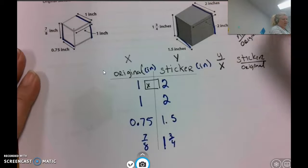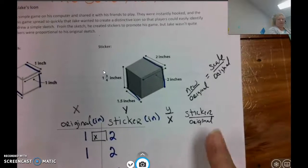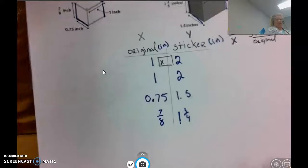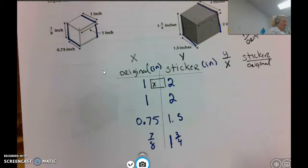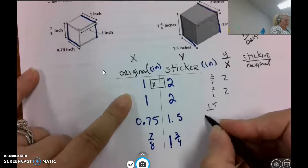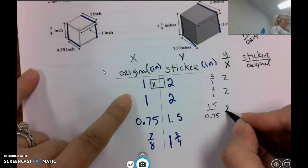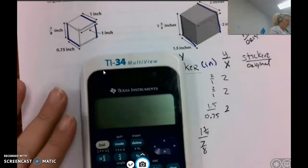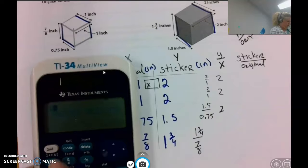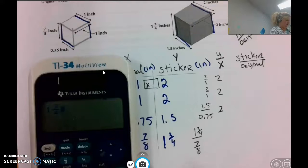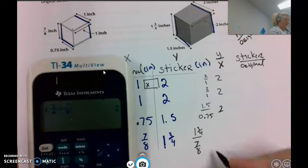In this situation, I'm going to do the sticker divided by the original. When we're dealing with scale factors and trying to find the scale factor, we will do the new over the original. Some people may say the scale over the original. In this situation, I just went ahead and stuck with sticker over the original. But new over original might be something good to keep in mind. Now I'm going to go ahead and just do this division. 2 divided by 1 is 2. 2 divided by 1 is 2. 1 and a half divided by 75 hundredths is 2. 1 and 3 fourths divided by 7 eighths, I'm really not sure. So I'm going to do that on the calculator: 1 and 3 fourths divided by 7 eighths, and that is 2 as well.